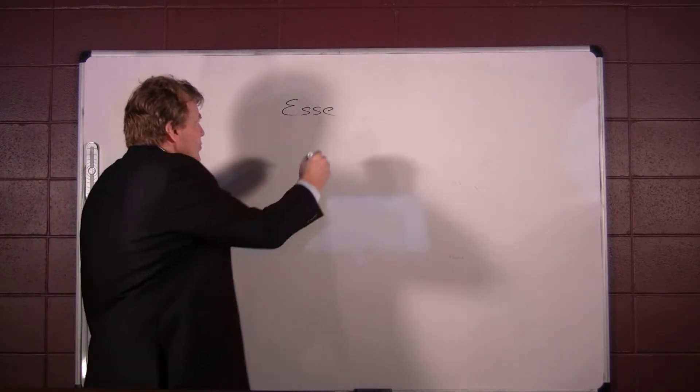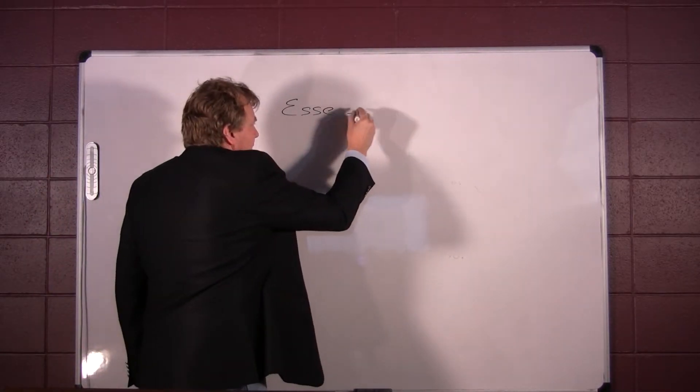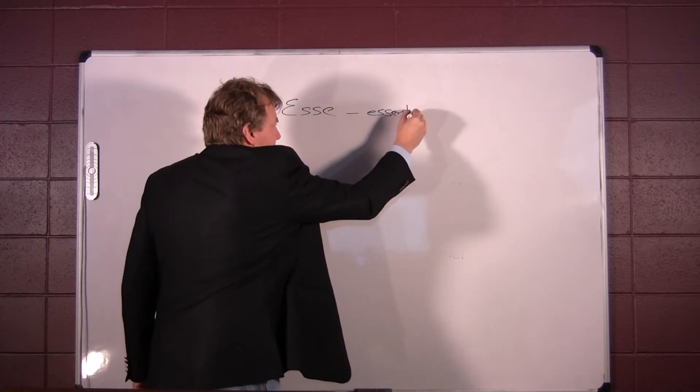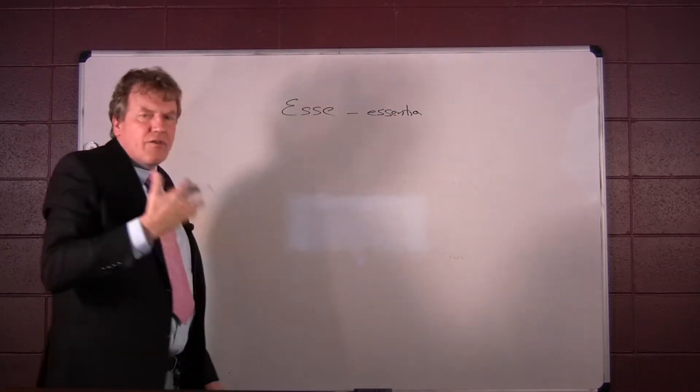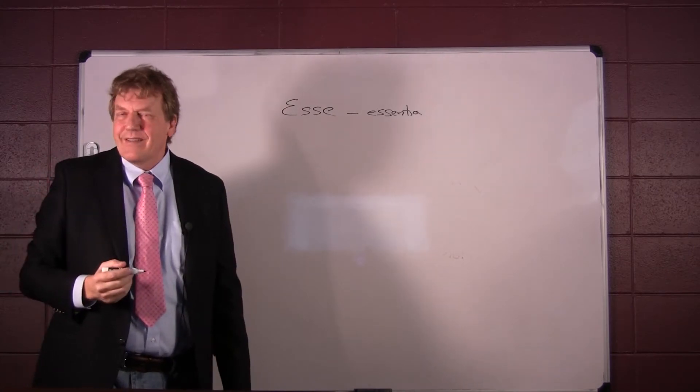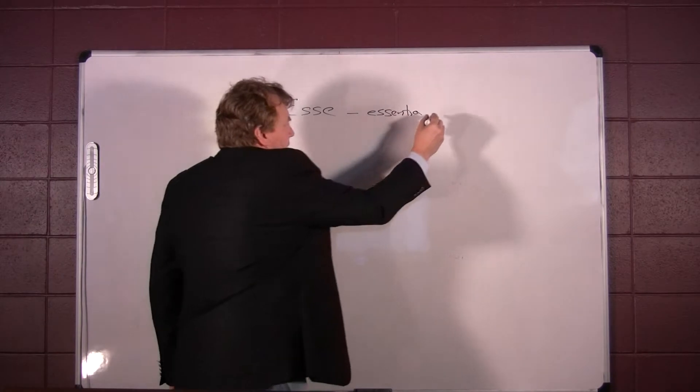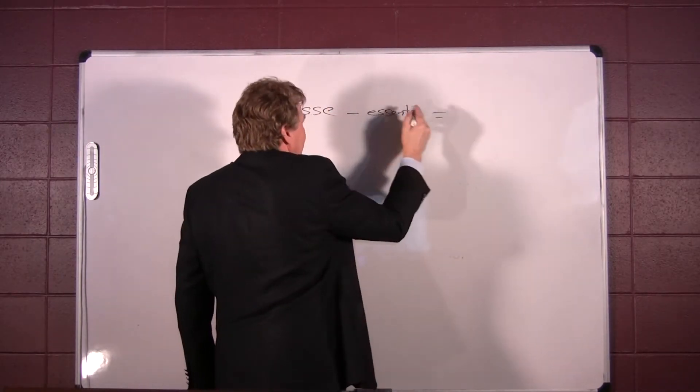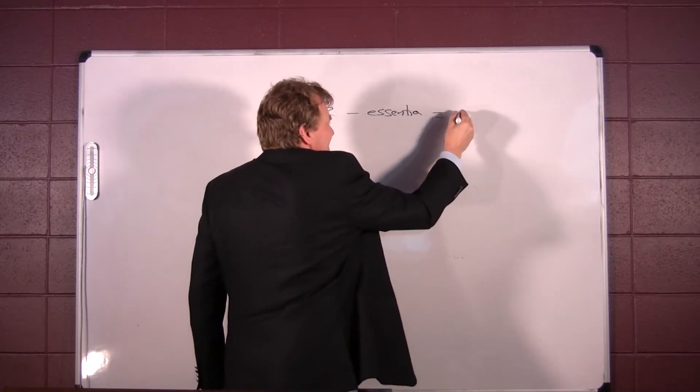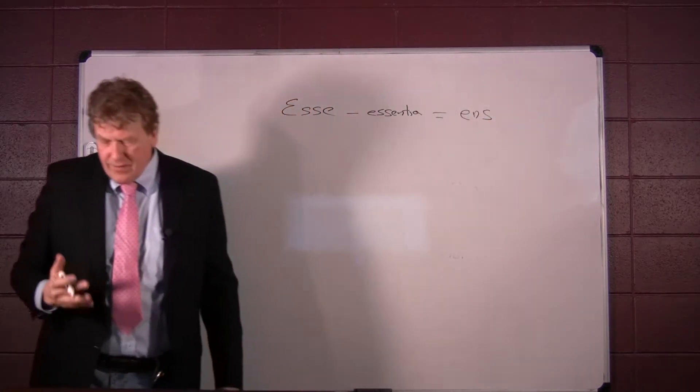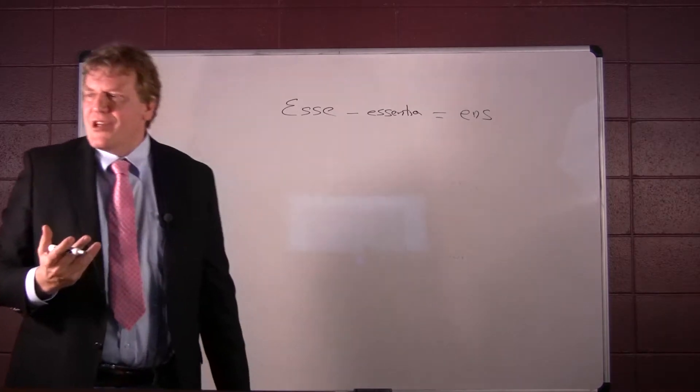And this tubinus, if you take tubinus and you lop off particular ways that the tubinus could be, if you take tubinus, essa, and subtract essentia, you get aba.